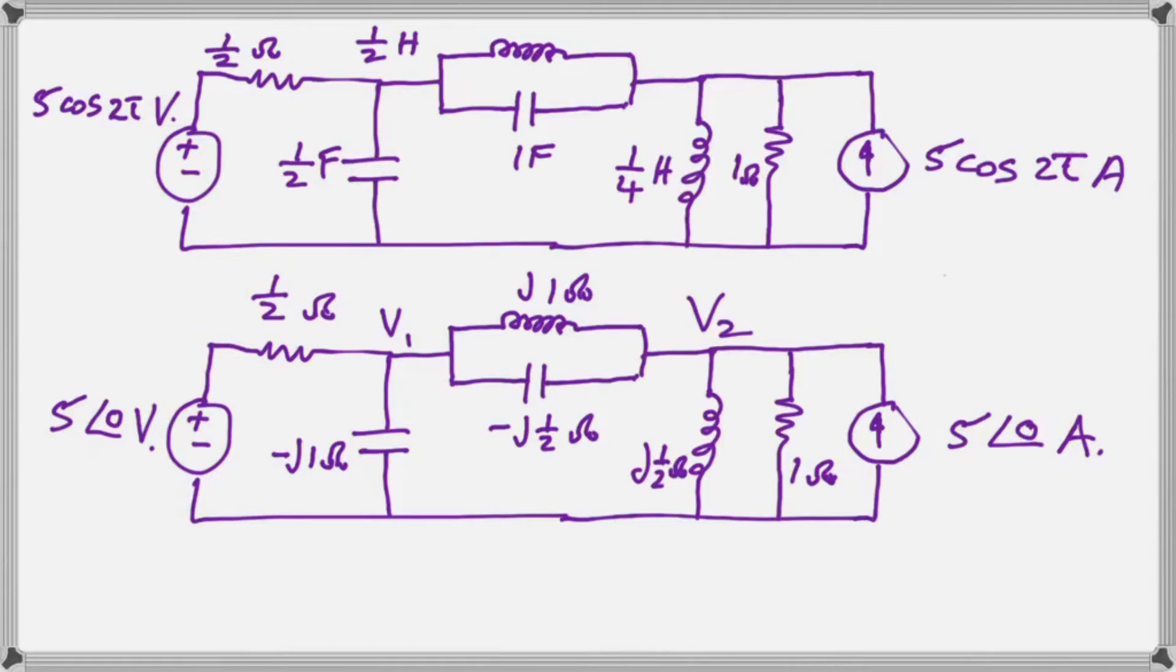We first redraw it to indicate the various impedances. We have relabeled the inductors and capacitors with their respective impedances. How do we decide on the impedances of the inductors and capacitors?